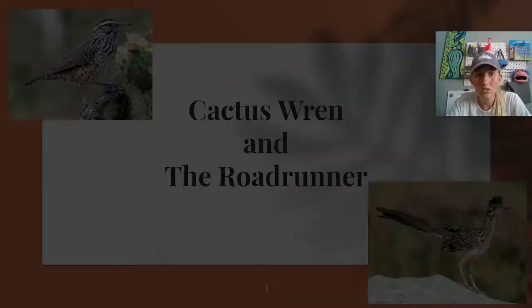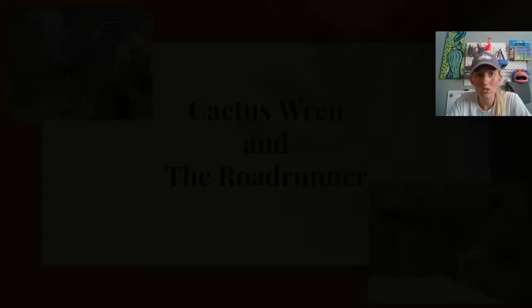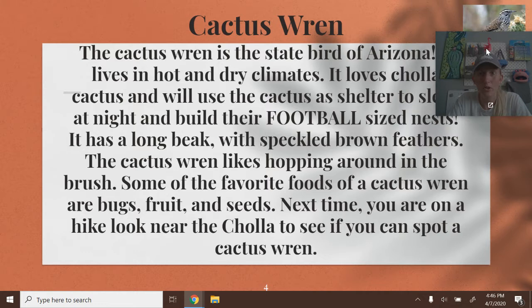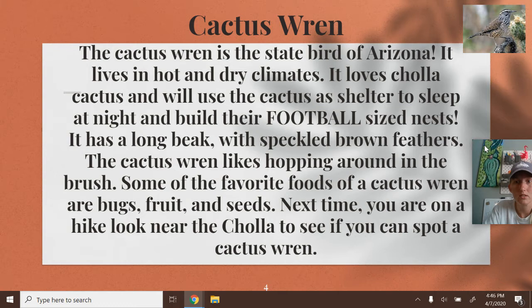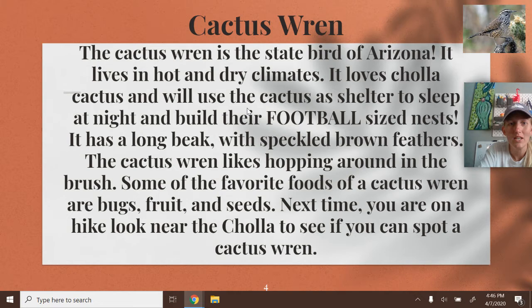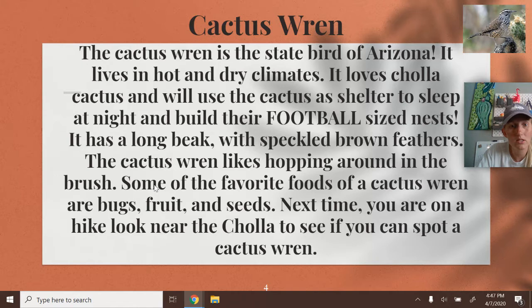The cactus wren is the state bird of Arizona. It lives in hot dry climates and it loves Cholla cactus. It will use the cactus as a shelter to sleep at night and to build their football-sized nest. It has a long beak with speckled brown feathers and the cactus wren likes hopping around in the brush. Some of its favorite foods are bugs, fruit, and seeds. Next time you are on a hike, look near the Cholla to see if you can spot a cactus wren.